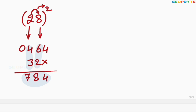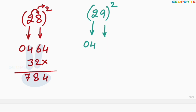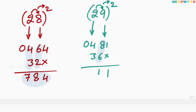Similarly, 29 whole square: 2 square is 04, 9 square is 81. 2 into 9 is 18, 18 into 2 is 36. Leave the first space, write 36 here. Add these two values: 1, 8 plus 6 is 14 — write 4 here, 1 carry forward. 1 plus 4 plus 3 is 8. Therefore, 29 whole square is equal to 841.